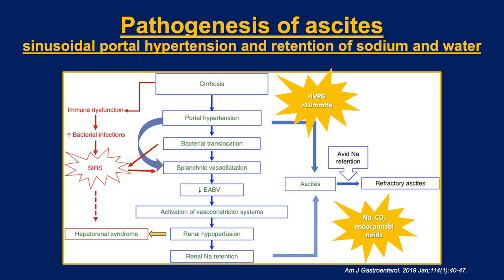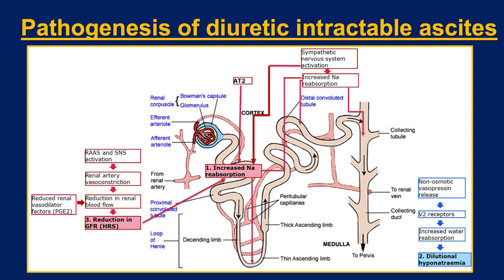That leads to splanchnic vasodilation, which is the key mechanism causing effective arterial blood volume depletion and hypovolemia, and activation of the renin-angiotensin-aldosterone system and CNS sympathetic nervous system, and a release of arginine vasopressin that leads to sodium and water retention in the kidneys and development of ascites. We don't really understand exactly why some people develop refractory ascites. It could be simply progression of their liver disease, their kidney dysfunction and their cardiac dysfunction. There are several mechanisms at the level of the kidney that contribute to intolerance or resistance to diuretics, and there are three things commonly described.